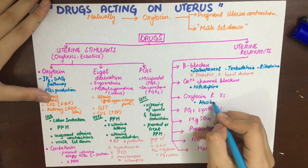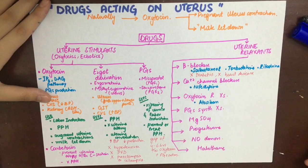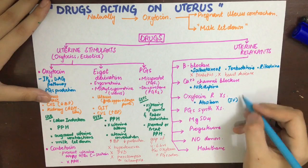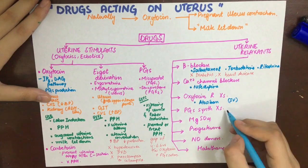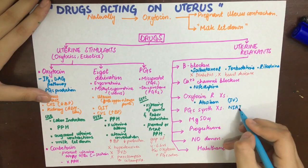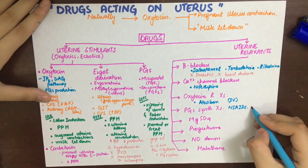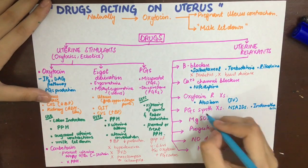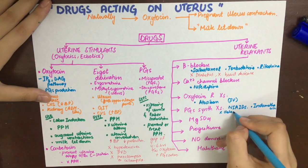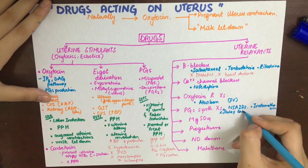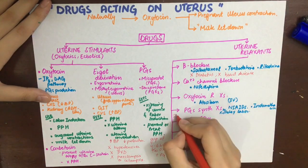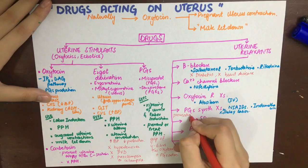Prostaglandin synthesis inhibitors, namely NSAIDs — chiefly indomethacin — are not commonly used to delay labor because they cause premature closure of the ductus arteriosus by inhibiting prostaglandin synthesis, which normally keeps it open. They can only be used for relief of dysmenorrheal pain.